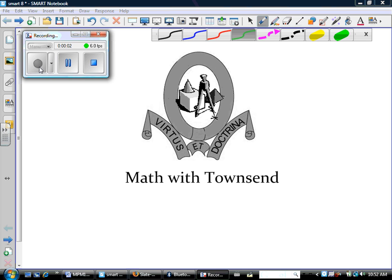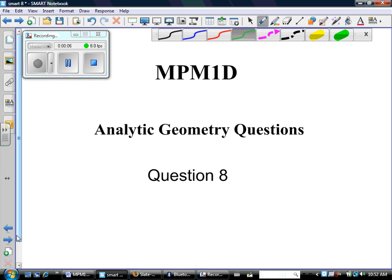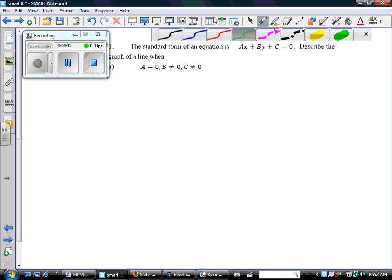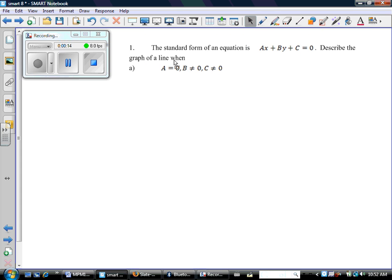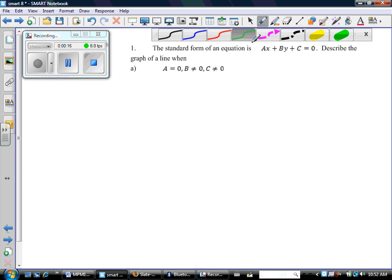Hi, this is Miss Townsend and I love math. Welcome to Math with Townsend. We're looking at the grade nine academic analytic geometry summative, question number eight. The question says that the standard form of an equation is Ax + By + C = 0. Well, we knew that already.